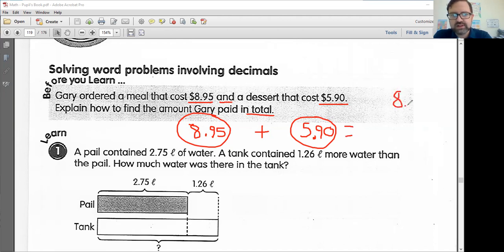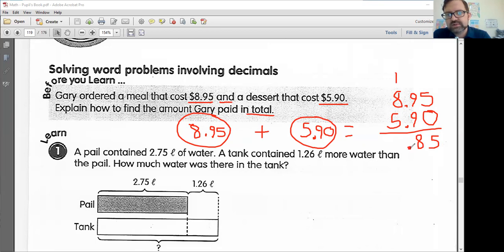I like putting my stuff vertically, meaning up and down. And then I can line up all these digits. Now, remember, boys and girls, when you are adding or subtracting decimals, please, please, please line up the decimal points. If you do not do that, you are going to get a wrong answer. 5 plus 0 is 5. 9 and 9 is 18. Carry the 1. Do not forget your decimal point. 8 and 1 is 9 plus 5 is 14.